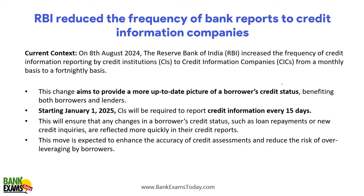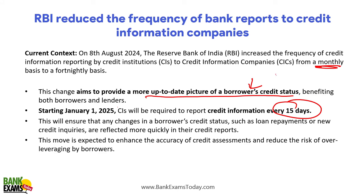RBI increased the frequency of credit information reporting by banks to credit information companies. On 8th August, RBI changed the reporting cycle from monthly to every 15 days. This change aims to provide a more up-to-date picture of a borrower's credit status, benefiting both lenders and borrowers.